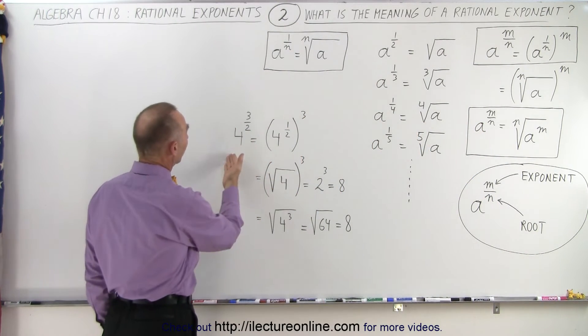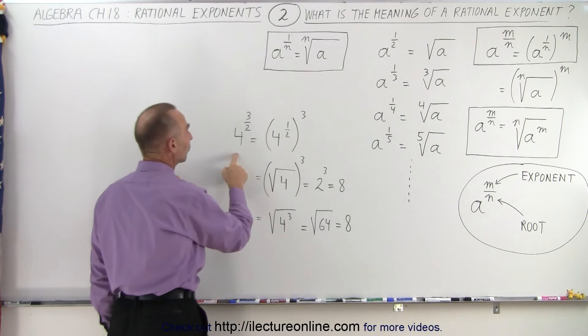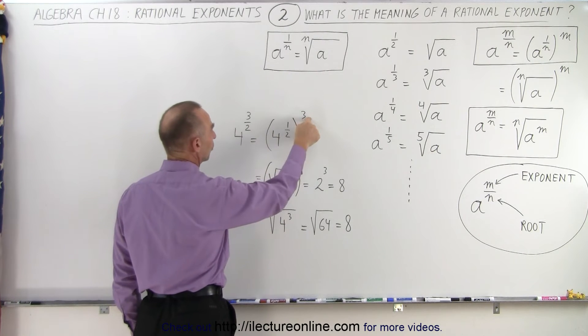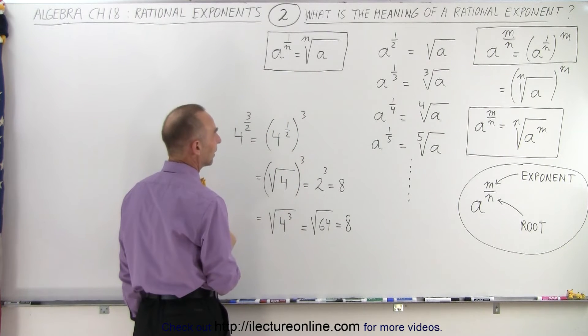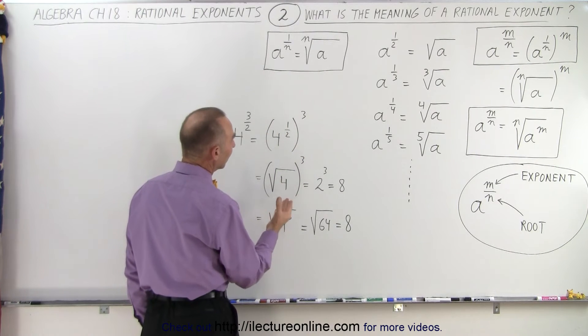So now we have the example 4 to the 3 halves, which can be written as 4 to the 1 half raised to the third power. Again, when you multiply these two together, you get 3 halves back. And then you can write it either like this,